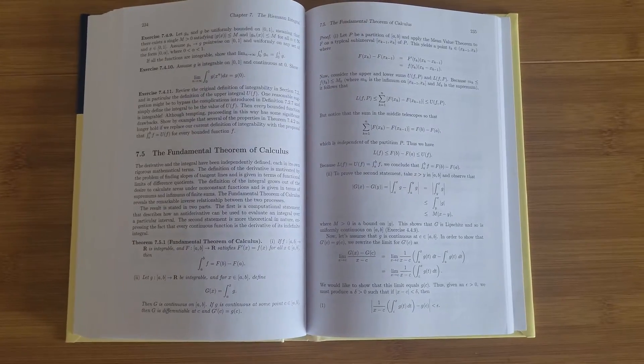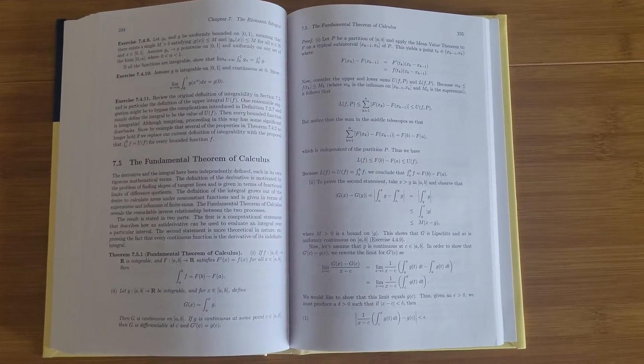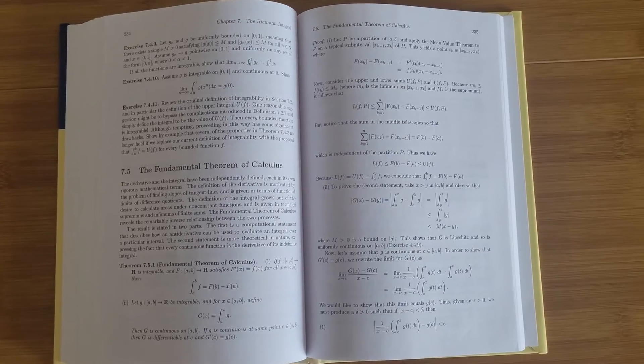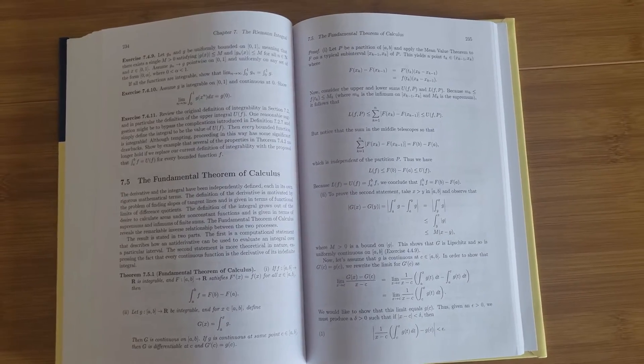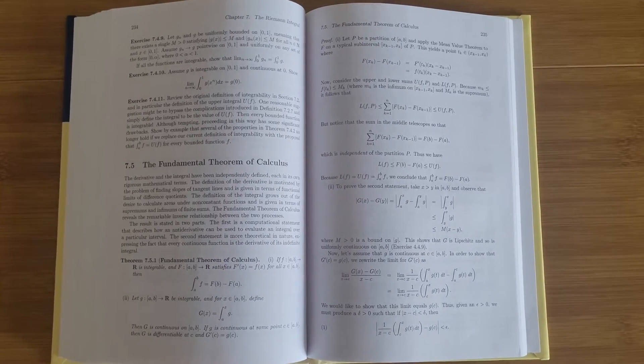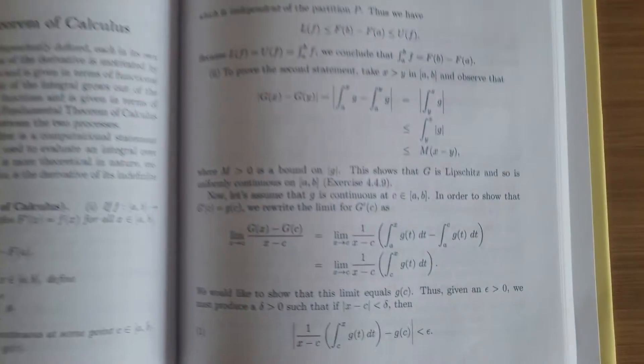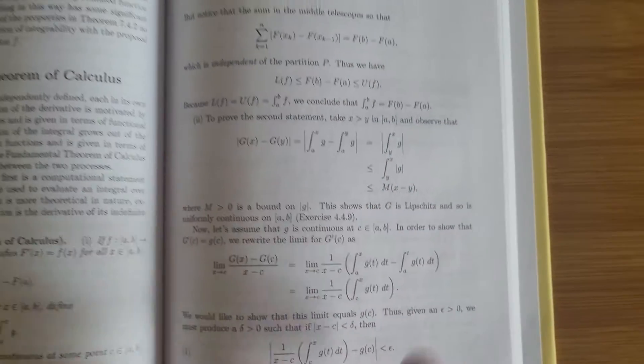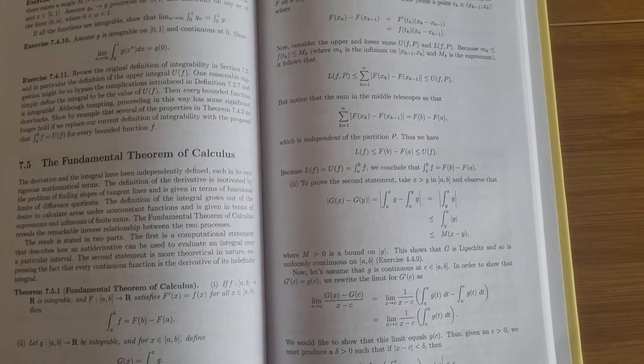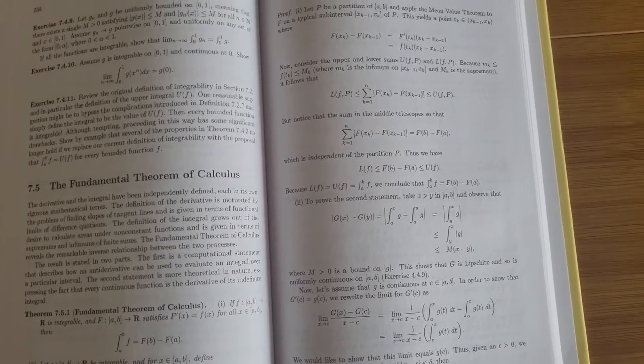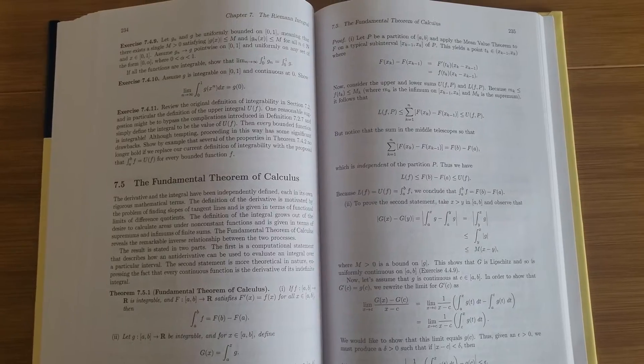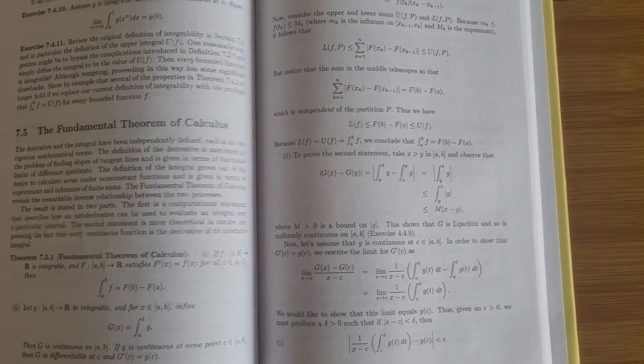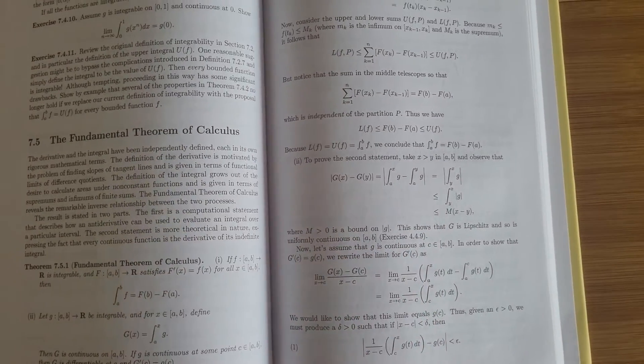The only minor issue I have is that sometimes it introduces theorems or ideas and refers to exercises to justify them. For example, when it shows that g is Lipschitz and uniformly continuous on a closed interval, it refers to exercise 4.4.9. Even though I've read the entire book, I haven't done every practice problem. You can guess the author's point, but if you haven't done the exercise, it's hard to understand.